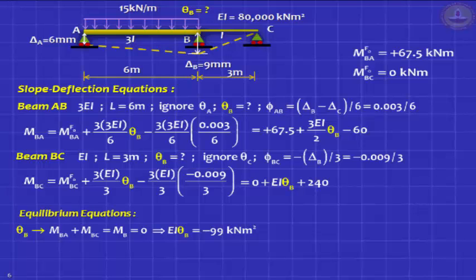Get a solution for EI*theta_B. It turns out to be negative, which means you have an anticlockwise rotation. You plug in those values, and you can get the answers for MBA and MBC. As you can see, they are equal and opposite.